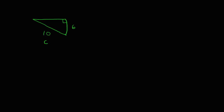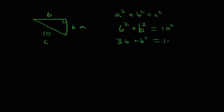Let's say that our hypotenuse is 10 and one of our legs is 6. The side opposite the 90-degree angle is the hypotenuse — we'll call that C. We'll call the 6 A and the missing side length B. Applying the Pythagorean Theorem: A squared plus B squared equals C squared. Plugging in: 6 squared plus B squared equals 10 squared, so 36 plus B squared equals 100. Subtracting 36 from both sides, B squared equals 64. Taking the square root of both sides, B equals 8.